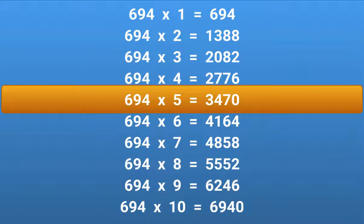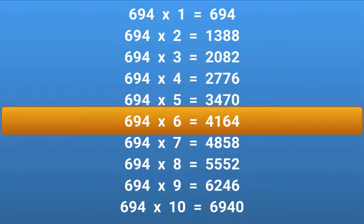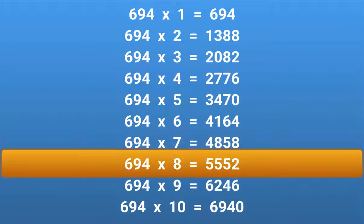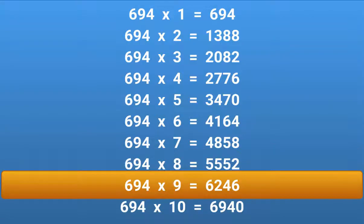694 × 5 = 3470. 694 × 6 = 4164. 694 × 7 = 4858. 694 × 8 = 5552. 694 × 9 = 6246.